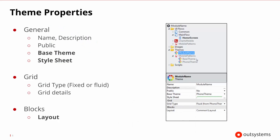If we look at the theme's properties — going down to the theme which is called module name — the module name has the base theme that it's based upon, which is the phone theme. You can see that this module name theme has its own style sheet, a grid type which is fluid, inherited from the phone theme, and then a particular type of layout.